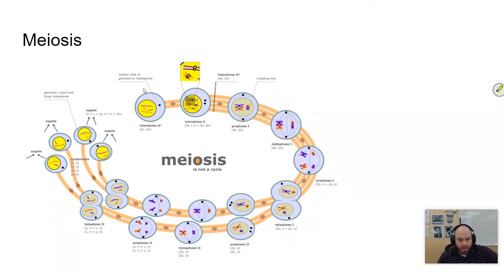Back to the process of meiosis: during meiosis there are two divisions — meiosis I and meiosis II. You can see all the phases here that you're familiar with: prophase, metaphase, anaphase, telophase. Those are the same as far as what happens in them, though there will be some differences we'll talk about.